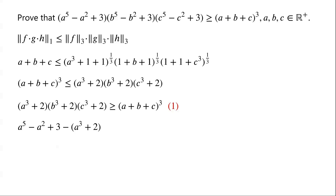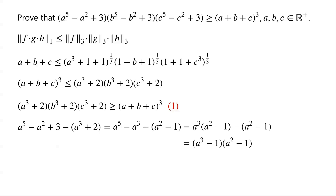Now we consider A⁵ - A² + 3 minus (A³ + 2), which equals A⁵ - A³ - A² - 1. The term A⁵ - A³ can be written as A³(A² - 1). The two terms share a common factor (A² - 1), so we can write this as (A³ - 1)(A² - 1), which is greater than or equal to 0. If A = 1, then both (A³ - 1) and (A² - 1) equal 0, so the product is 0.